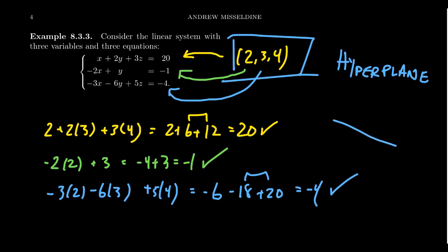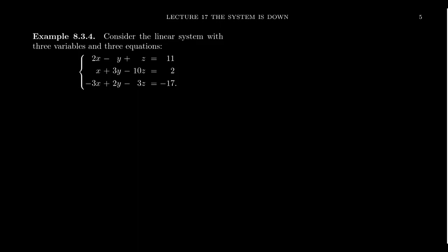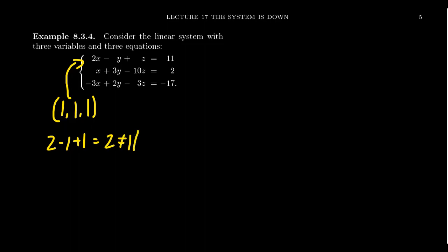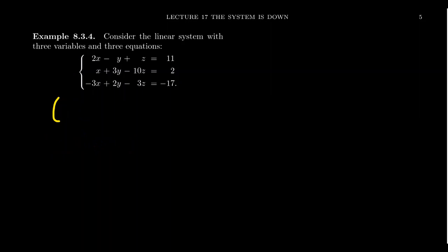It's also possible to get no solution — like two parallel lines in the plane — or in higher dimensions you can get multiple solutions. Consider the system: 2x minus y plus z equals 11, x plus 3y minus 10z equals 2, negative 3x plus 2y minus 3z equals negative 17. I claim I can give you multiple solutions. One should be careful — not everything is a solution. If you try (1, 1, 1) in the first equation, you get 2 minus 1 plus 1 equals 2, which is not 11. To be a solution you have to satisfy every equation.